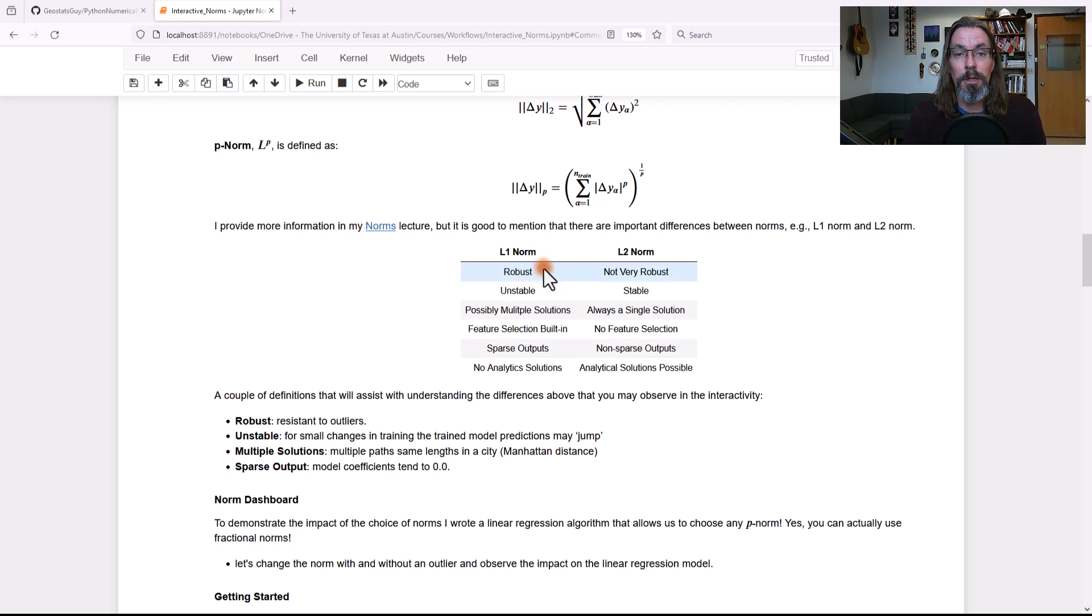L1 norm is going to be more robust. L2 norm may not be so robust. What does robust mean? Resistant, resilient, robust in the presence of outliers. What is its sensitivity to outliers? The L1 norm may be unstable while the L2 norm is more stable.